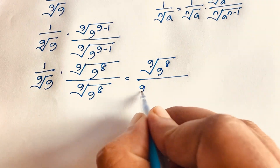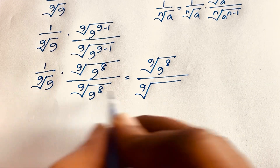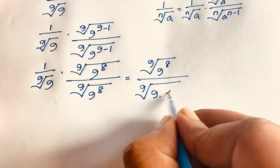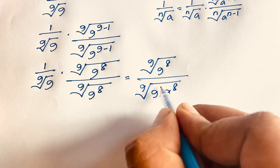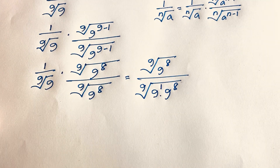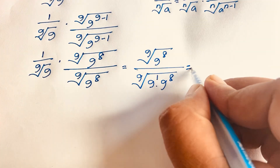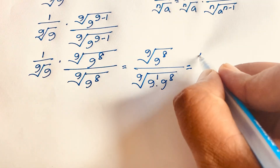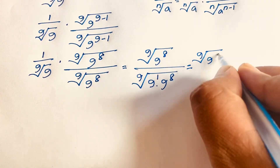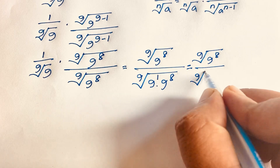Now this expression — 1 times the 9th root of 9, times the 9th root of 9 to the power 8 — and the denominator expression is 1. Evaluating it, it will be the 9th root of 9 to the power 8, over the 9th root of 9 to the power 9.